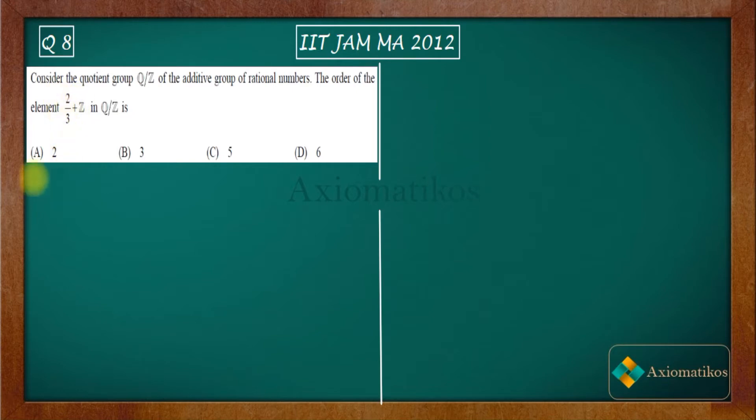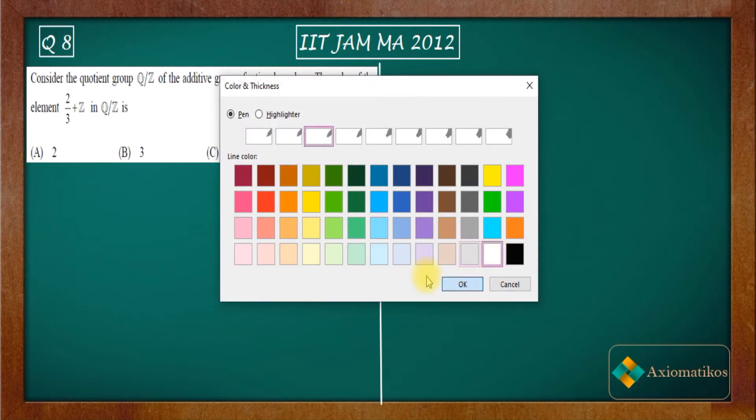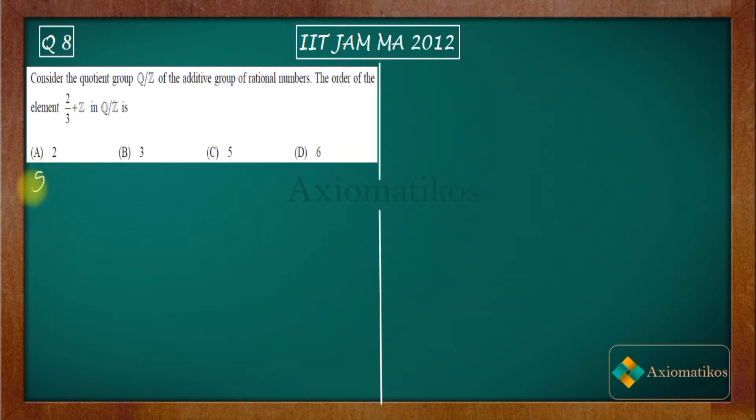So you have these options in your hand and you have to find out the order for this element. Let us just change the pen. Okay, so see what we have.